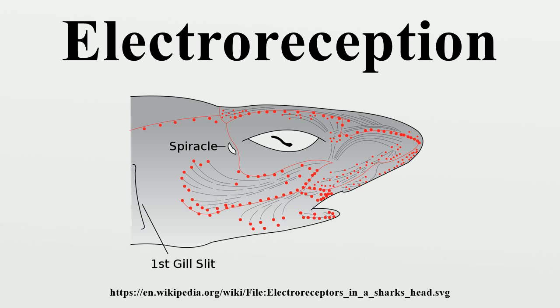Until recently, electroreception was known only in vertebrates. Recent research has shown that bees can detect the presence and pattern of a static charge on flowers.